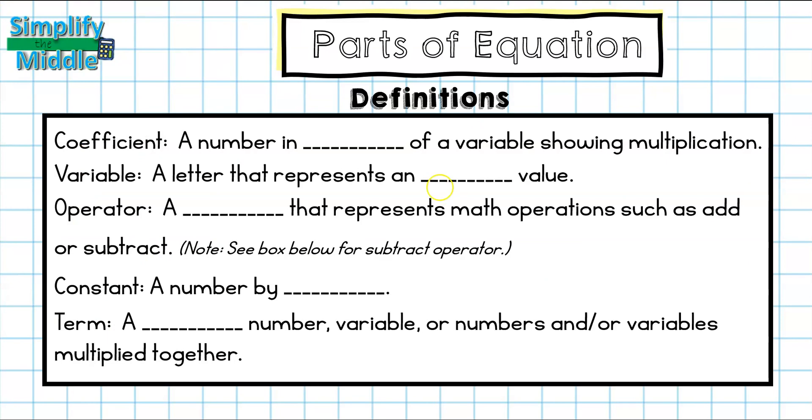Let's recap. The definition for a coefficient is a number in front of a variable showing multiplication. A variable is a letter that represents an unknown value. An operator is a symbol that represents math operations such as add or subtract.